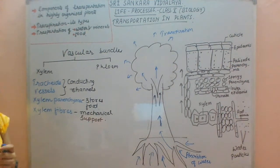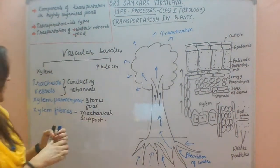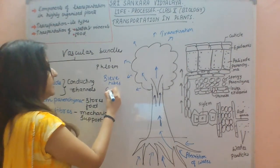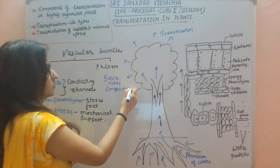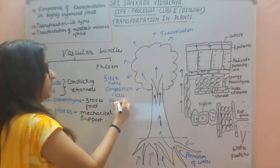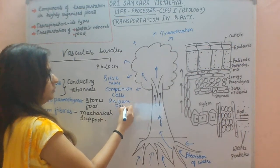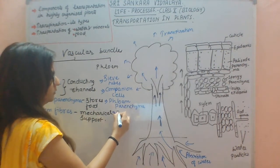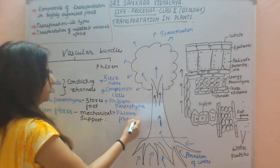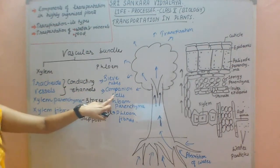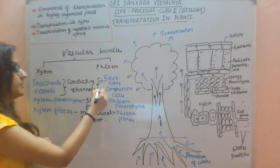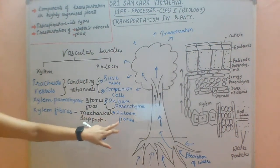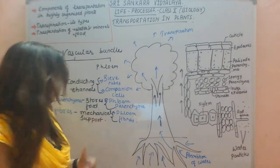These are the four components of xylem. Phloem comprises of sieve tubes, companion cells, phloem parenchyma, and phloem fibres. Same as xylem, sieve tubes and companion cells are the conducting channels of phloem. Phloem parenchyma helps in the storage of food, and phloem fibres, like xylem fibres, help in mechanical support.